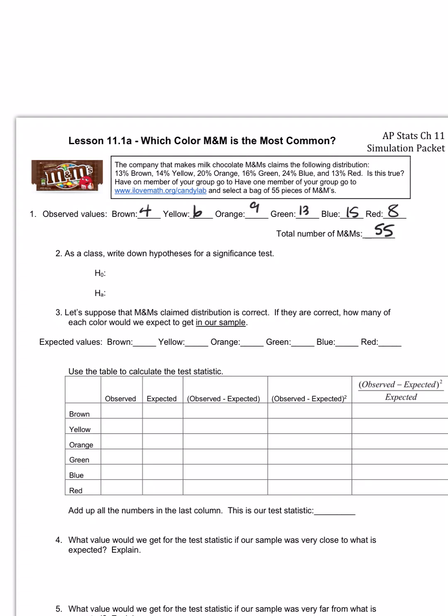The company that makes M&Ms claims the following distribution in each bag: 13% brown, 14% yellow, 20% orange, 16% green, 24% blue, and 13% red. Is this true? Well, we're gonna figure it out. So we've gone through our bag, we've categorized our colors, and here it is.